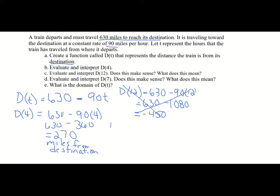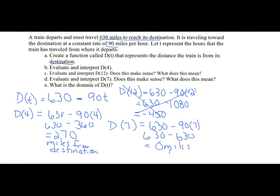Let's try D of 7: 630 minus 90 times 7. 90 times 7 is 630, so 630 minus 630 equals zero. The train is zero miles from the destination. D of 7 does make sense — it means it takes seven hours to travel to our destination, and we've made it.